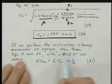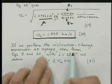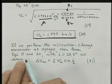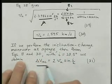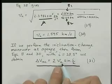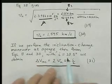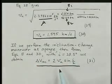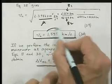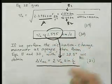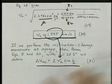If we perform the inclination change maneuver at apogee, then from equation 8, which is essentially this equation where I've now put in VA, plugging in 28.5 degrees and putting for the VA this number, we get the following result.